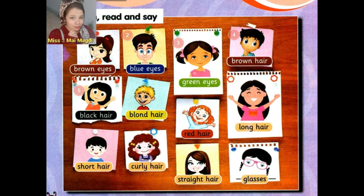Number six: Blonde hair. Blonde hair. Number seven: Red hair. Red hair — يعني شعر أحمر، شعر لونه أحمر. Again, red hair. Okay, blue eyes, black hair — we also have red hair in our vocabulary list.